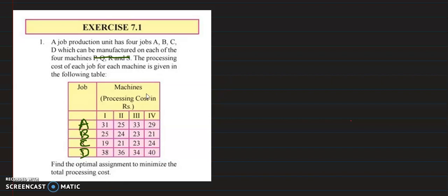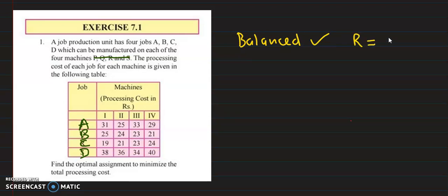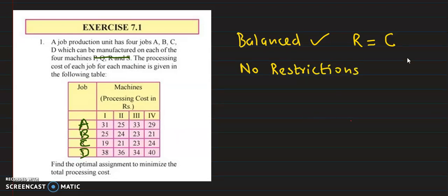So let's begin. First of all, we have to check some things. First, we check if this problem is a balanced type. There are 4 rows and 4 columns, so this question is in the balanced category — it already has an equal number of rows and columns. Then we check that there are no restrictions in this question. And this question is the minimize category.